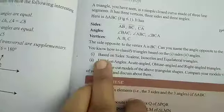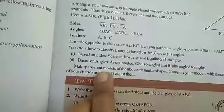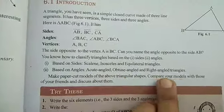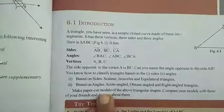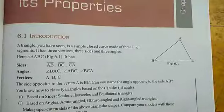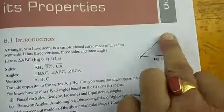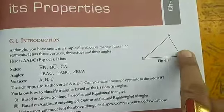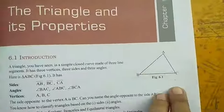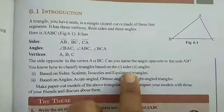Based on sides, we have scalene, isosceles, and equilateral triangles. A scalene triangle has all three sides of different lengths. An isosceles triangle has two sides equal. An equilateral triangle has all three sides equal.